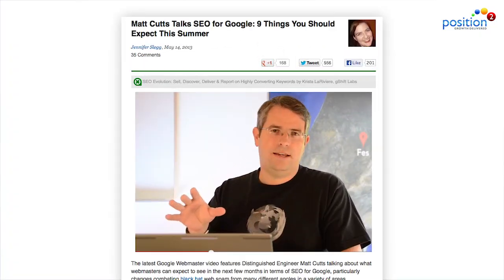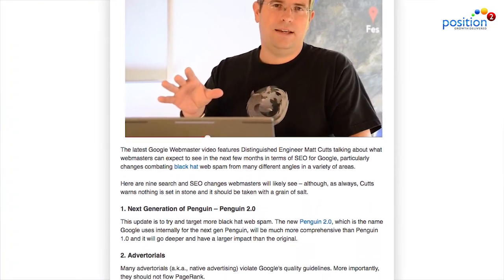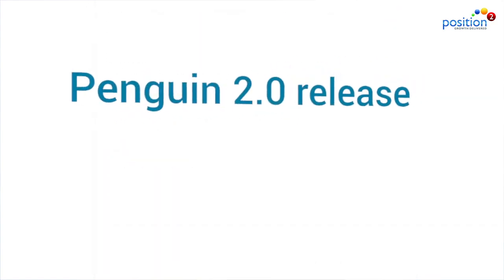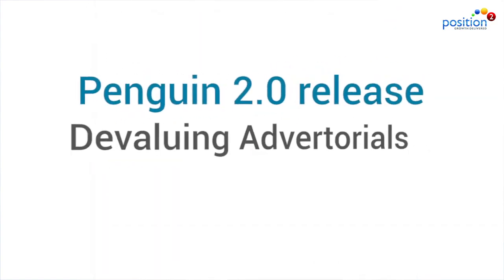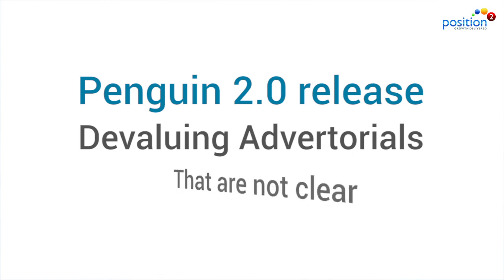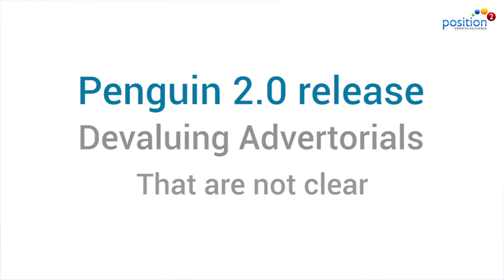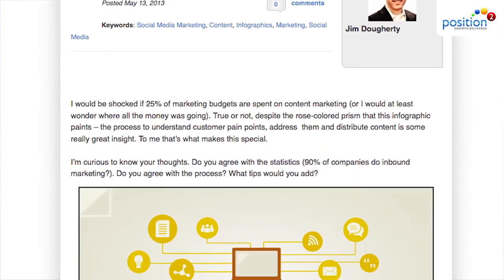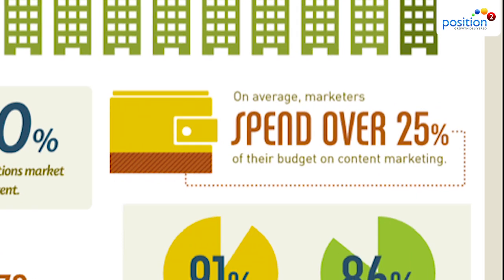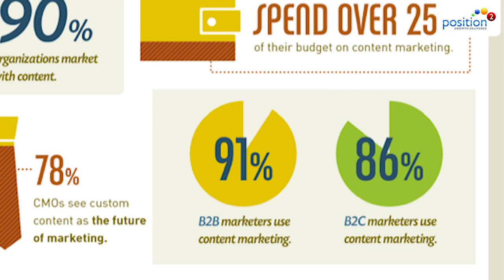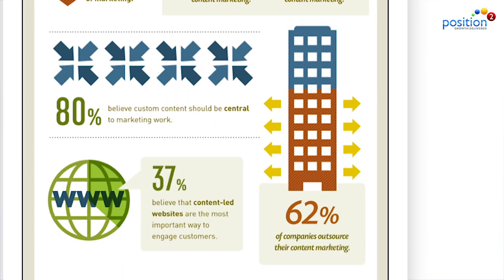For SEO, MapCarts has an article and video about the upcoming Panda 2.0 release. It'll have a number of important changes, including devaluing advertorials — especially those that are not clearly marked — and working on making link buying less effective. Here are some content marketing stats from Demand Metric: 25% of marketers' budgets go towards content marketing; 91% of B2B firms and 86% of B2C firms use content marketing; and content marketing costs 62% less than traditional marketing.